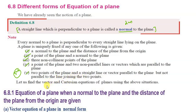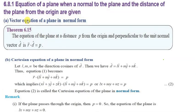Using the above situations, we will derive the vector and Cartesian equation of the planes. We will find the vector and Cartesian equation of the plane and the distance of the plane from the origin using the first method. Now we will see the vector equation of the plane in normal form.